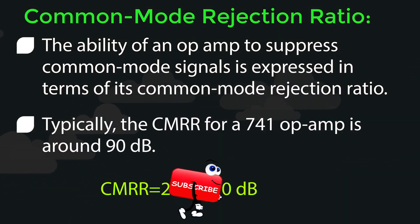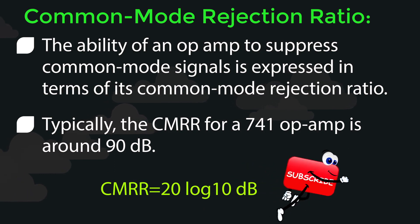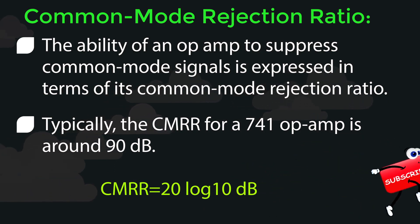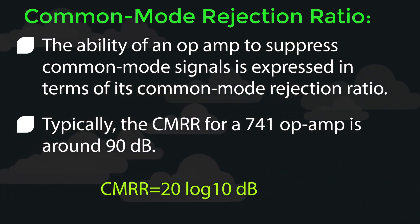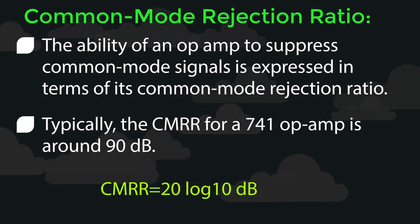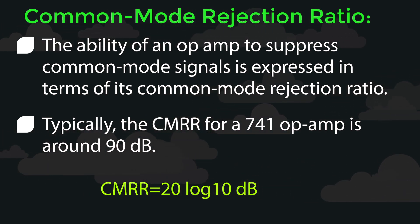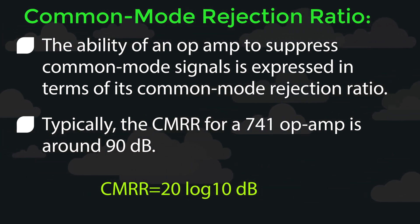Typically, the CMRR for a 741 OPAMP is around 90 dB. CMRR is equal to 20 log base 10 of differential voltage gain divided by common mode gain, expressed in dB.